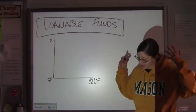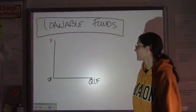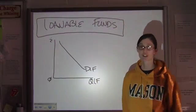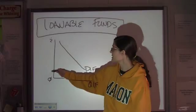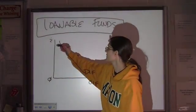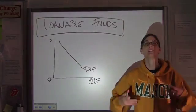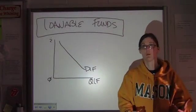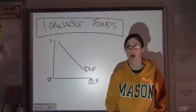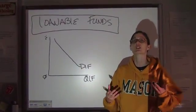Now, just like all the other demand graphs that we talked about all year, demand for loanable funds is downward sloping. Because when the interest rate is lower, people demand more money, and when the interest rate is higher, people have a disincentive to borrow. Incentive to borrow when it's lower, disincentive when it's higher.